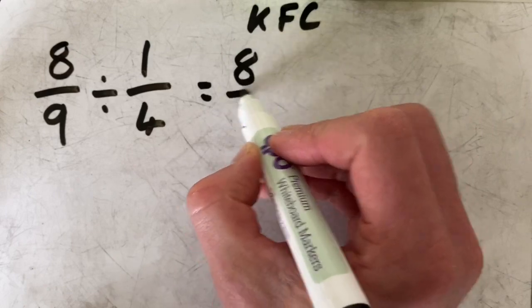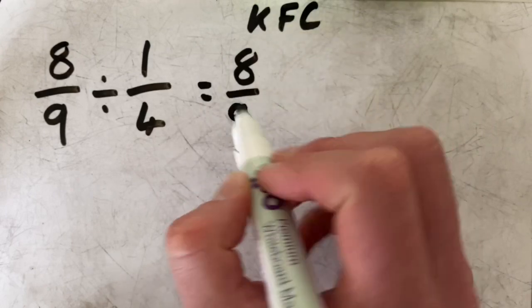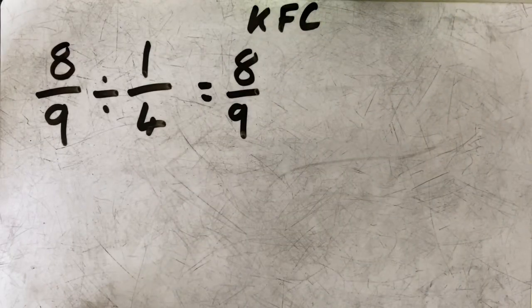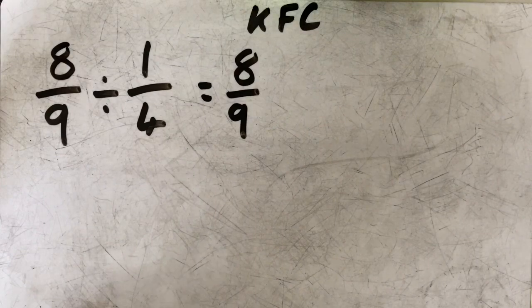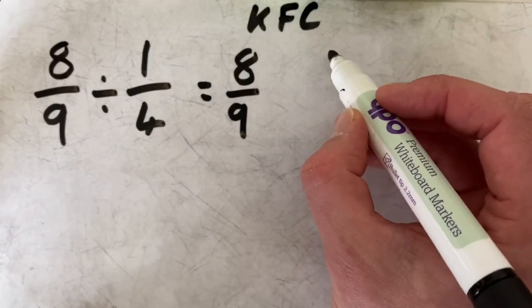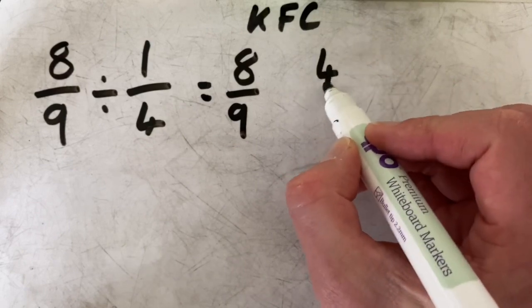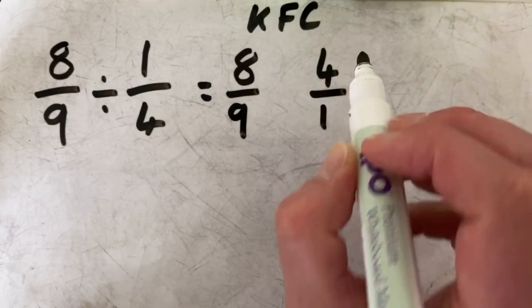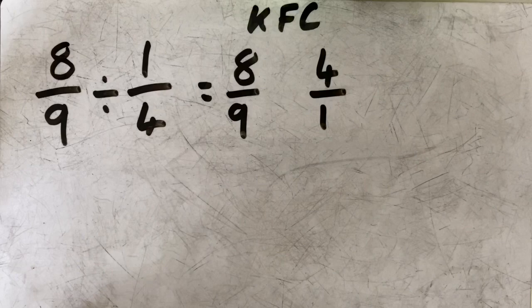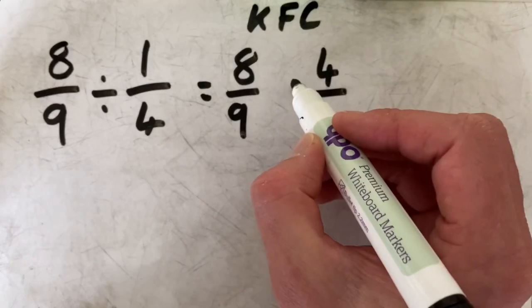So in eight-ninths divided by a quarter, we keep the first one, eight-ninths. F stands for flip the other one. So that will be the same as four over one, or four wholes. And C stands for change the symbol.